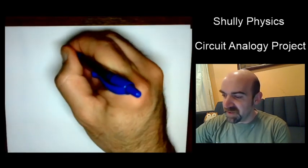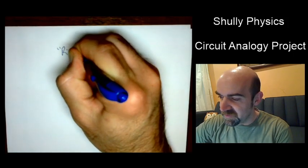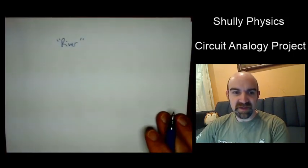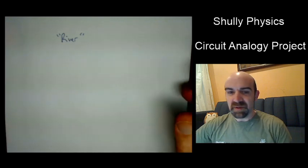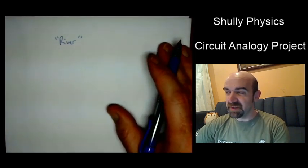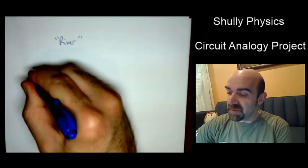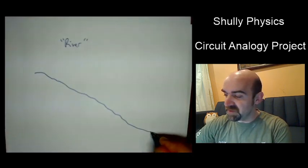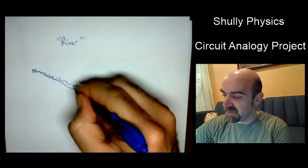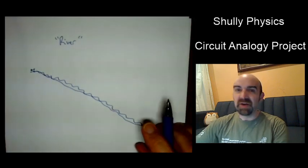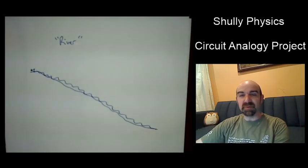There we go. So, this is my river analogy, right? So, let me get started here. Electrical circuits are like a river. They flow down a mountain. Water flows down a mountain in the river like circuits flow through a circuit.